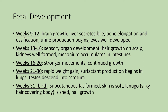Weeks sixteen through twenty, you get much stronger movements and the mother can often now feel the fetus moving. There is continued growth. Weeks twenty-one through thirty, there is rapid weight gain and you start to see surfactant production beginning in the lungs. If a baby is preterm and born before sufficient surfactant production, that is one of the concerns — surfactant keeps the alveoli from sticking and collapsing. They may need to do additional things to help that premature newborn if there is not enough surfactant production.